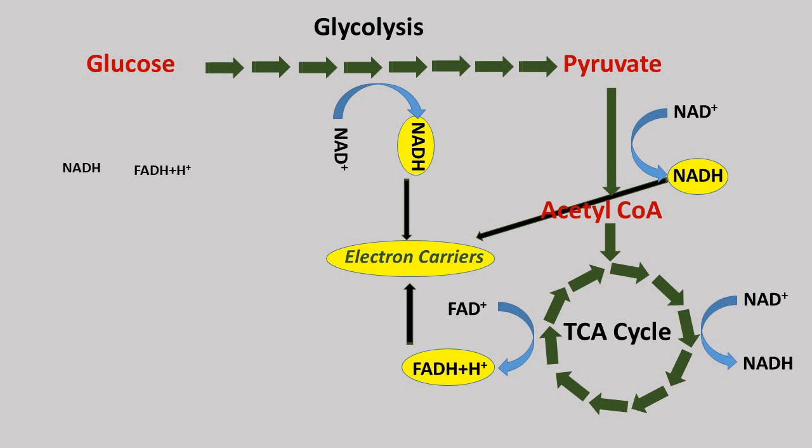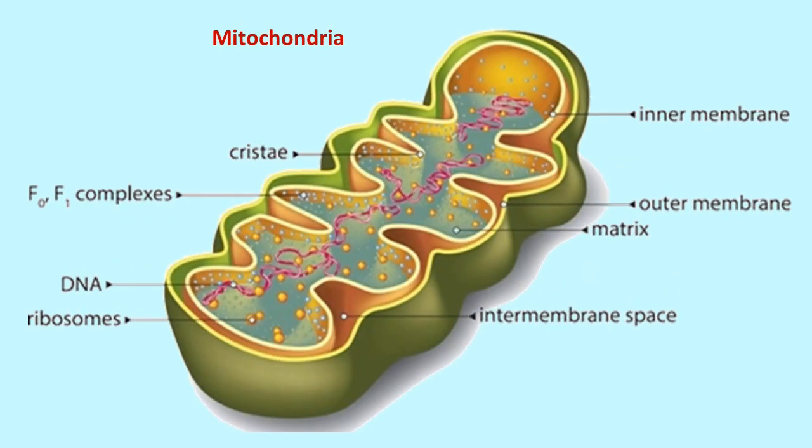These electron carriers are subjected to participate in electron transport chain and get oxidized back to NAD and FAD. These lose their high-energy electrons. The energy of these electrons is released by transpositioning downhill from a chain of electron carriers which is eventually used to pump the protons from matrix to inner membrane periplasmic space. This is how the electron transport chain works in mitochondria.